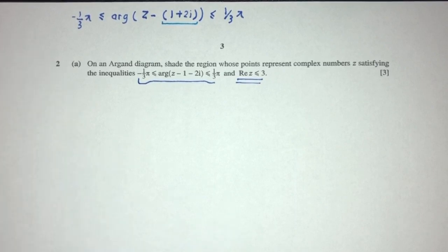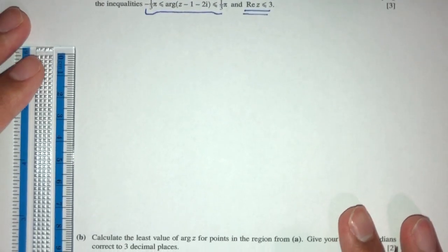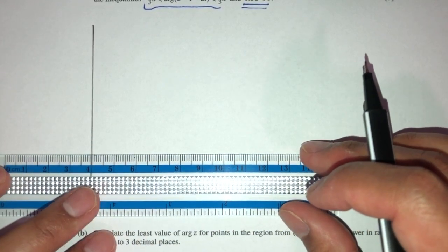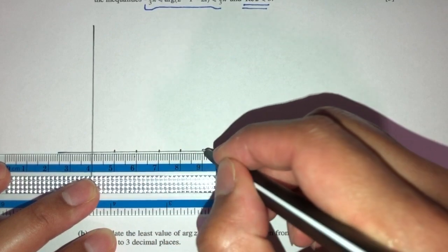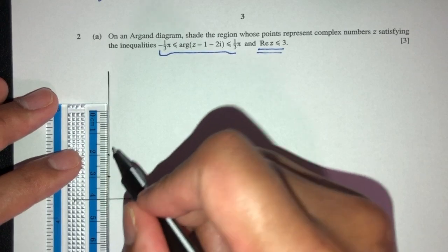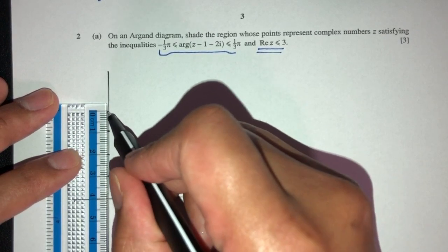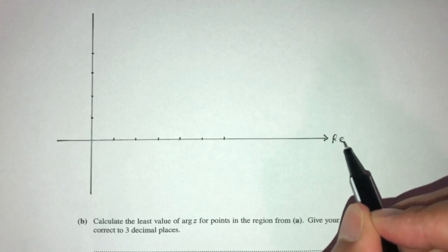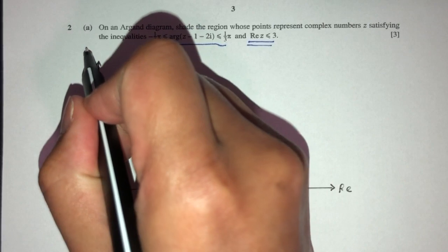Let's try to sketch the Argand diagram. We have the imaginary axis — use a pencil to sketch — and this should be the real axis. Marking values 1, 2, 3, 4, 5, 6 on the real axis and 1, 2, 3, 4 on the imaginary axis should be enough.